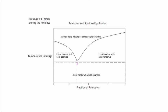The composition of the liquid mixture phase can be read from the x-axis. In the liquid mixture, the composition of rainbows is about 0.34, and that of sparkles is about 0.66. If the solids are separate, one is pure rainbows, and one is pure sparkles.